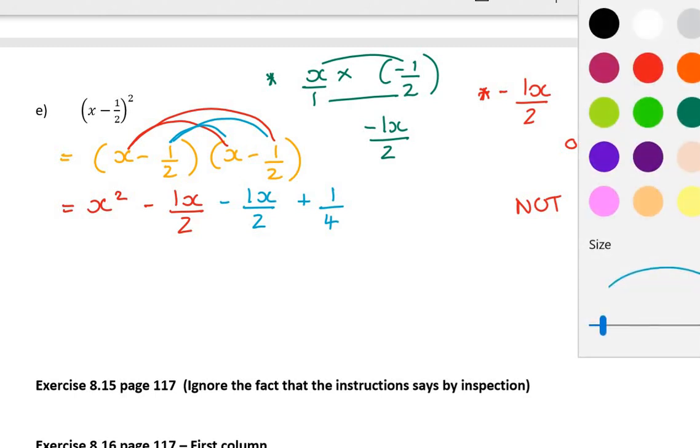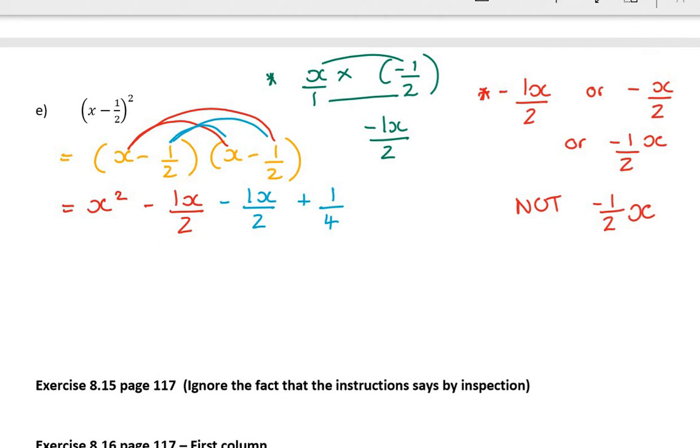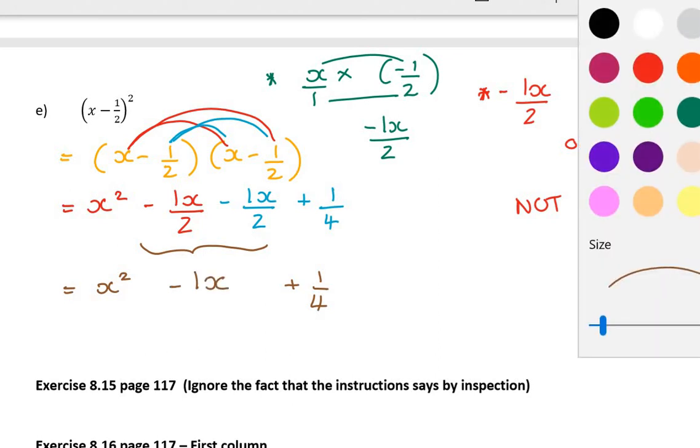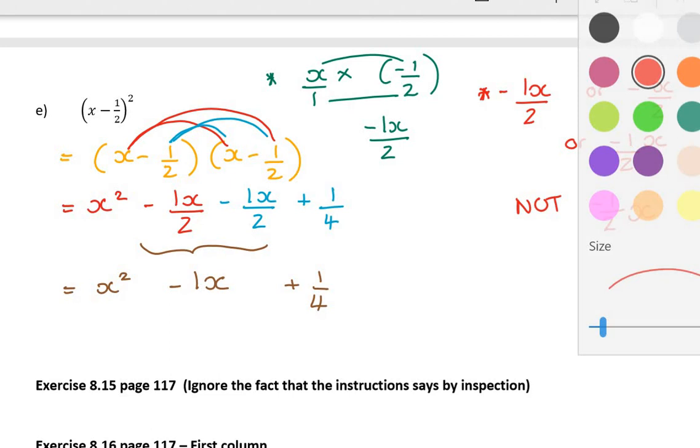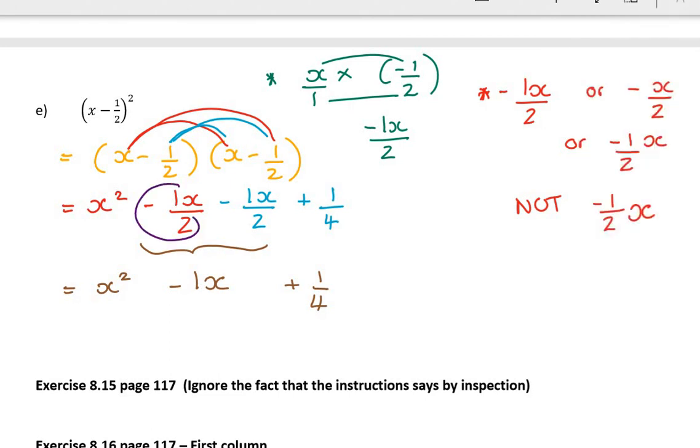But you can always cheat and get your calculator to help you with the numbers. Last thing those are like terms so my x squared and my plus a quarter are there. Now if I have minus a half and I minus another a half I think that's minus 1 or just minus x but again if you don't like fractions pick up your calculator and get your calculator to do minus a half minus a half and it'll tell you it's minus 1 and then you just have to remember to put the x back in. So don't let the fraction questions destroy you, they're exactly the same logic.